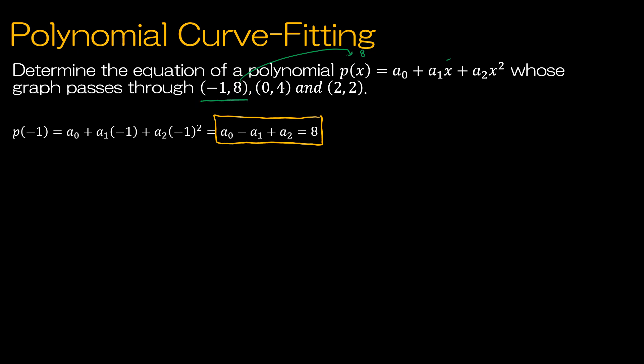I'll repeat that process for 0, 4. I'm replacing P of X with 4 and X with 0. A sub 0 plus A sub 1 times 0 plus A sub 2 times 0 squared gives me my second equation, A sub 0 equals 4. For my third equation, I'll use the point 2 comma 2, replacing X with 2 and P of X with 2.